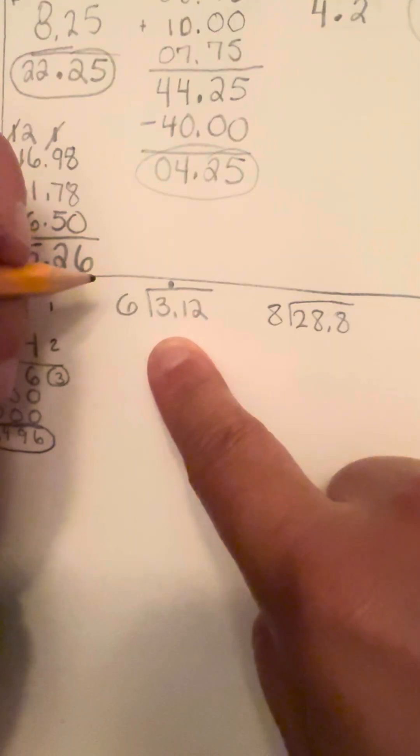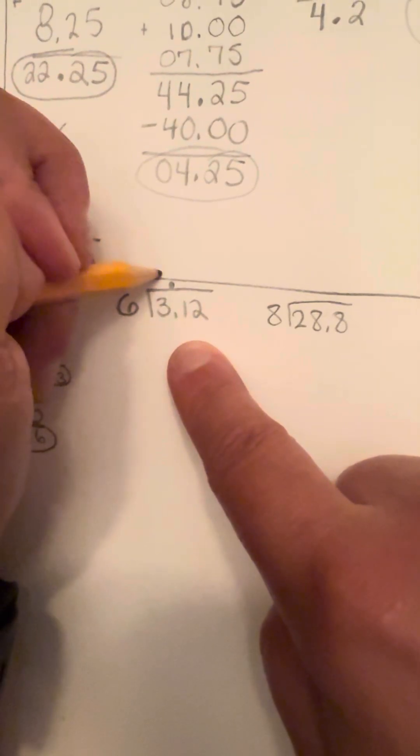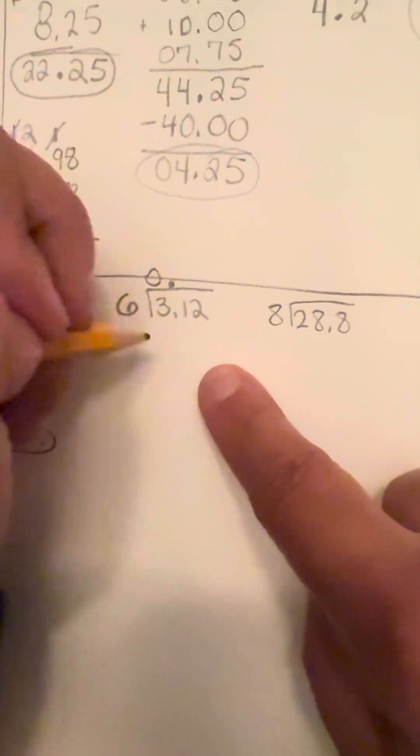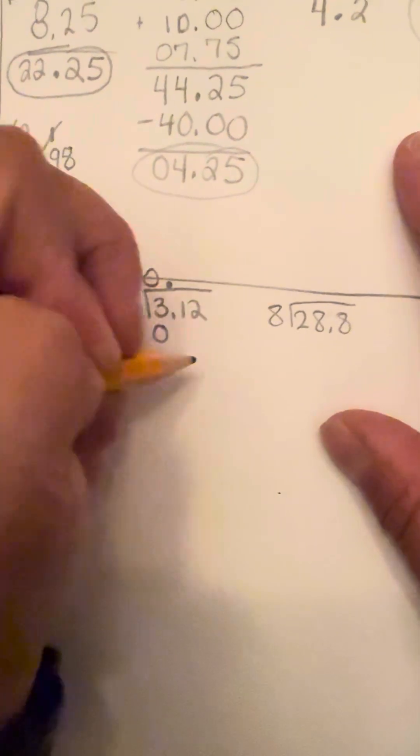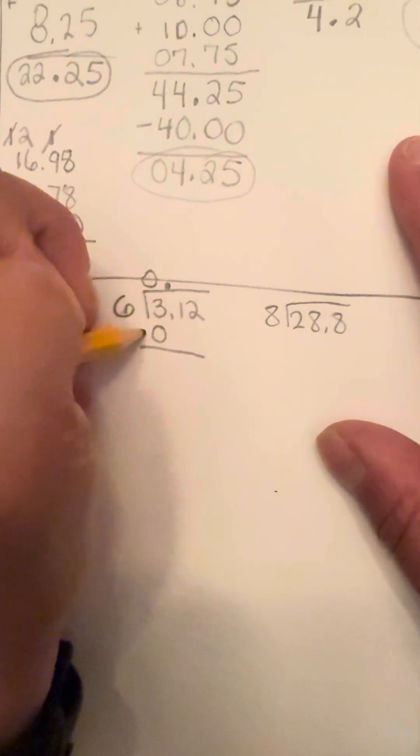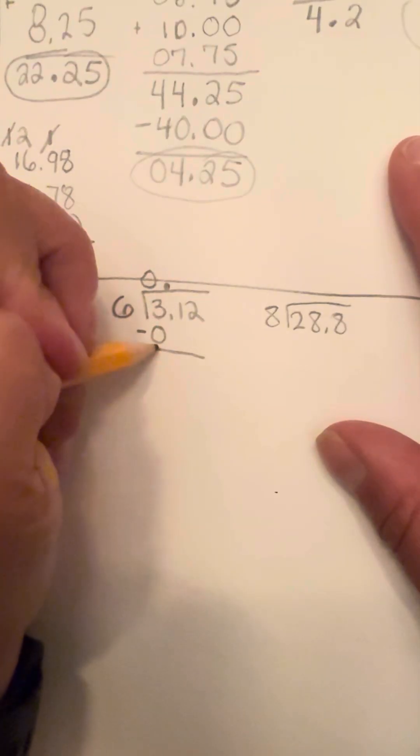Now six can't go into three because it's obviously not big enough. So we're going to put this zero right here. We're going to put a zero right here because six times zero would give me zero. So then we're going to subtract that. Three minus zero would be three.